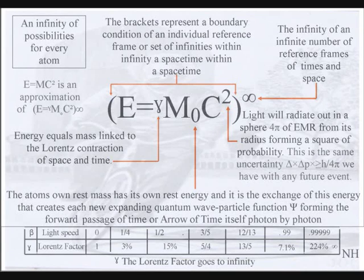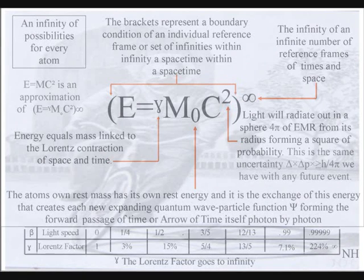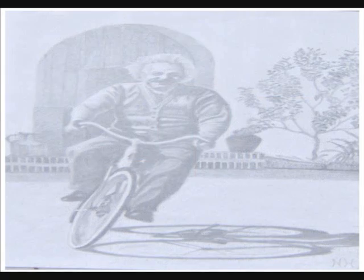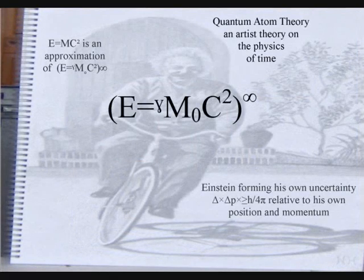The c² in the equation represents light radiating out in all directions at a constant speed, forming a sphere of electromagnetic radiation. From its radius, forming a square of probability — this is the same probability we have with any future event, because the process forms the flow of time itself, photon by photon. The brackets represent the boundary condition of the reference frame formed by the energy, and the infinity symbol represents an infinite number of reference frames that make up our universe.